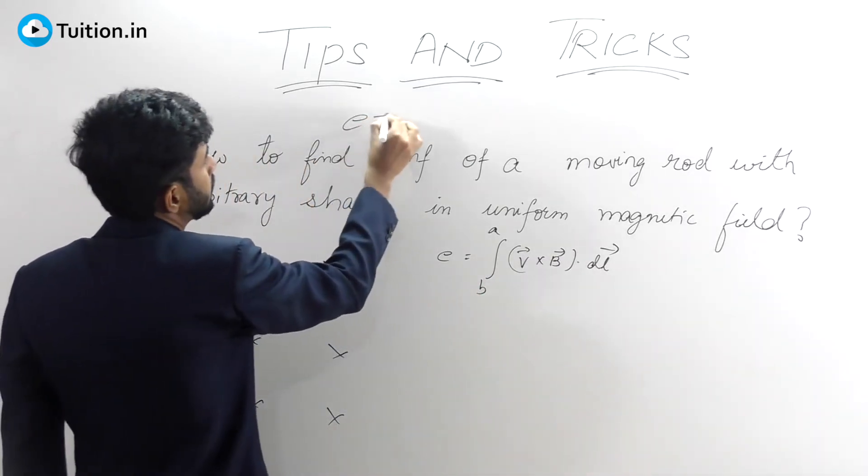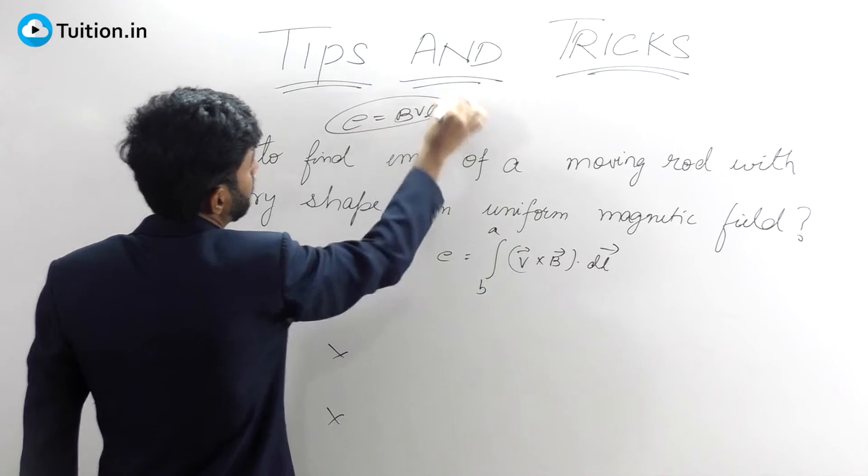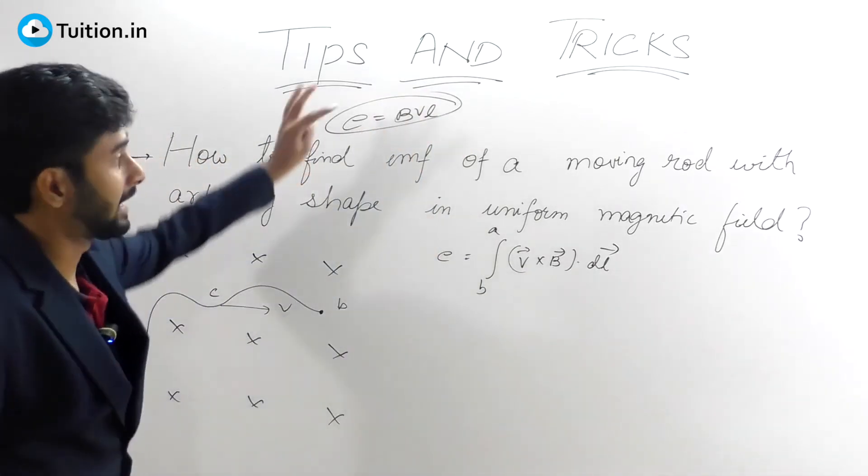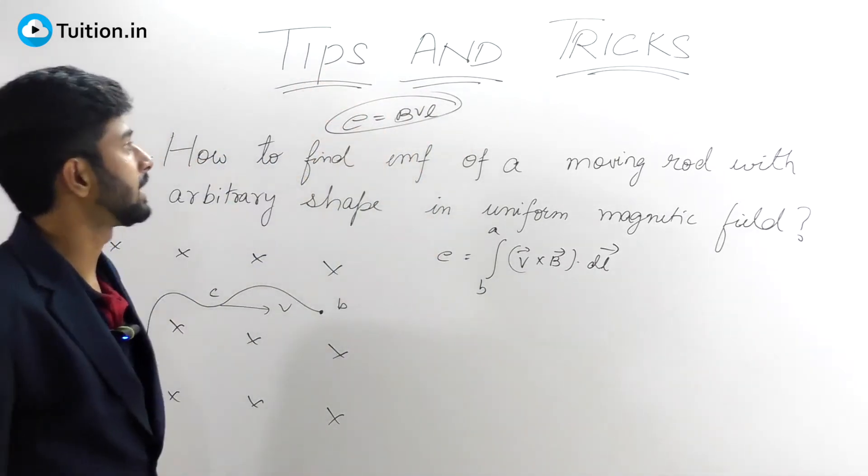EMF is given by this formula E equals BVL, which comes from magnetic concepts.